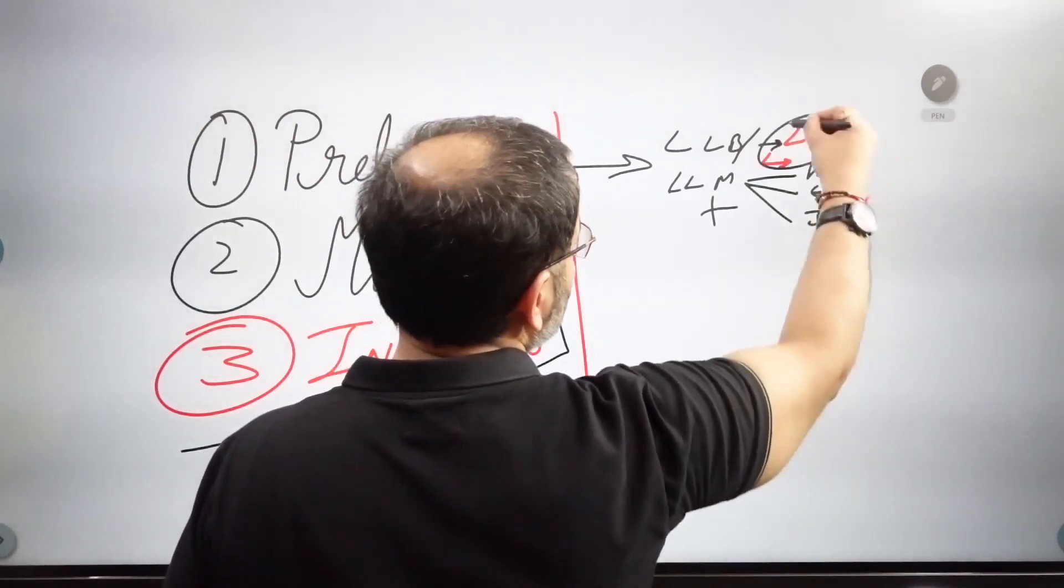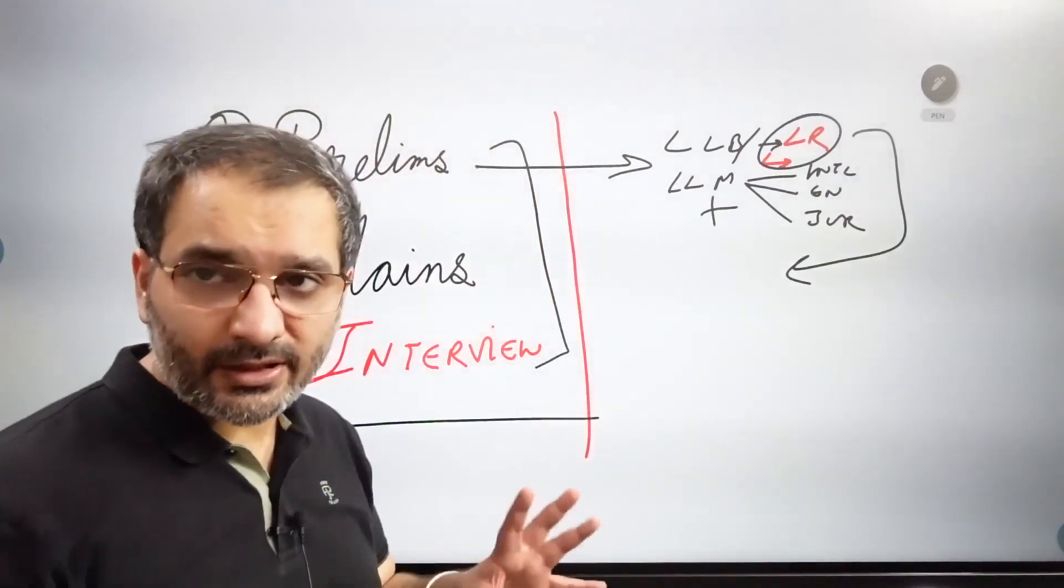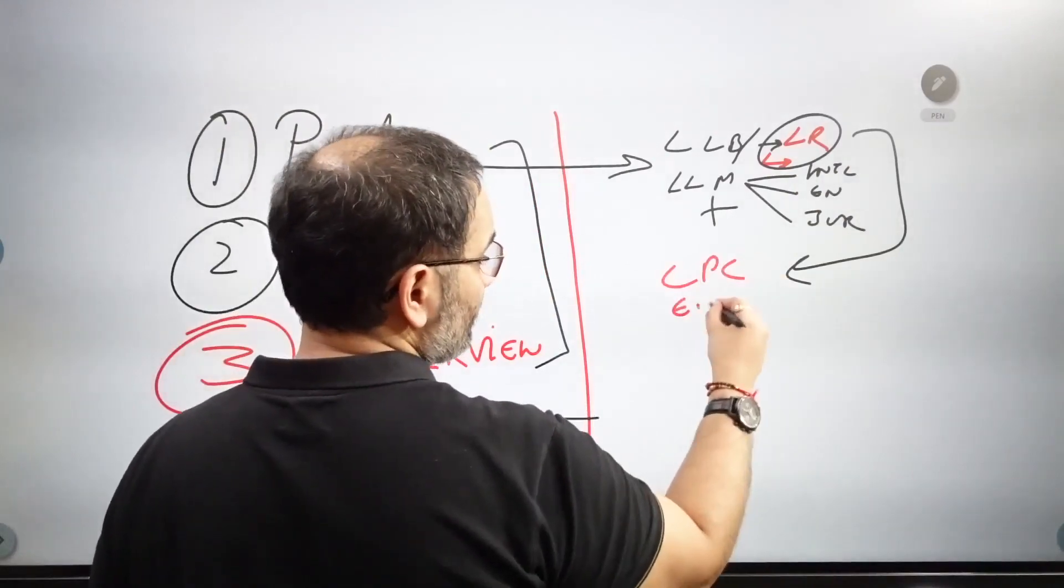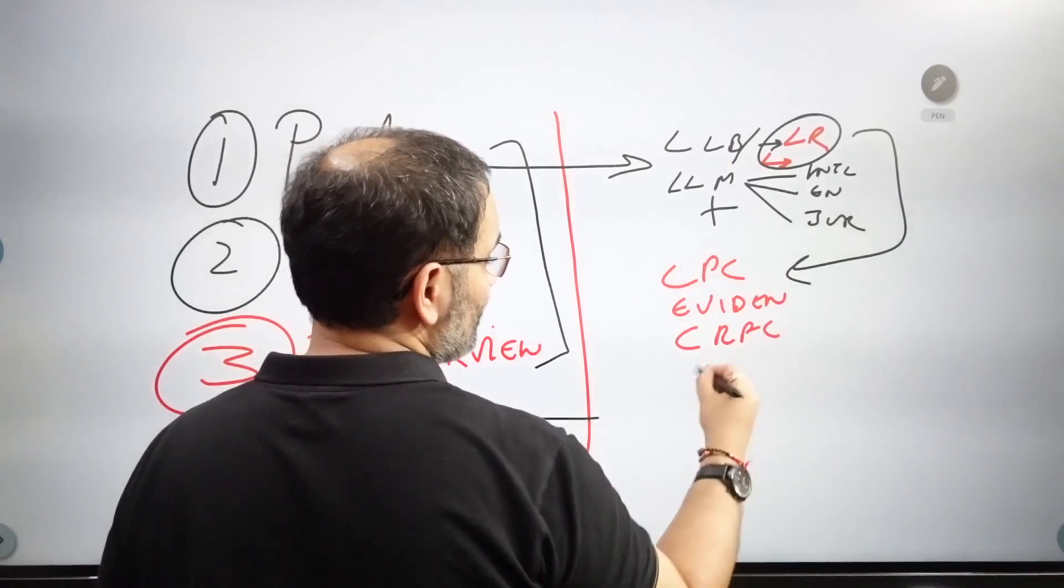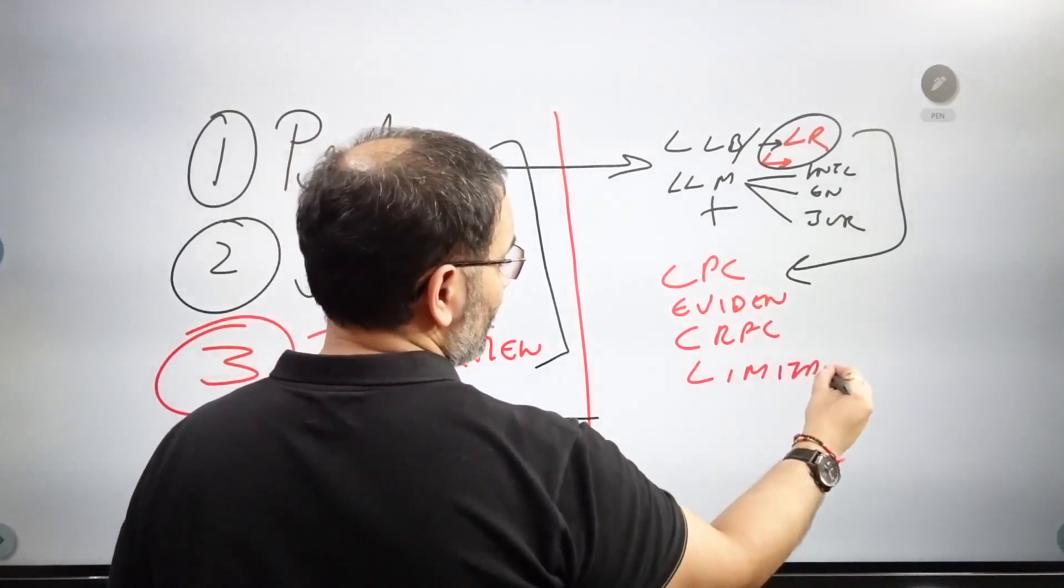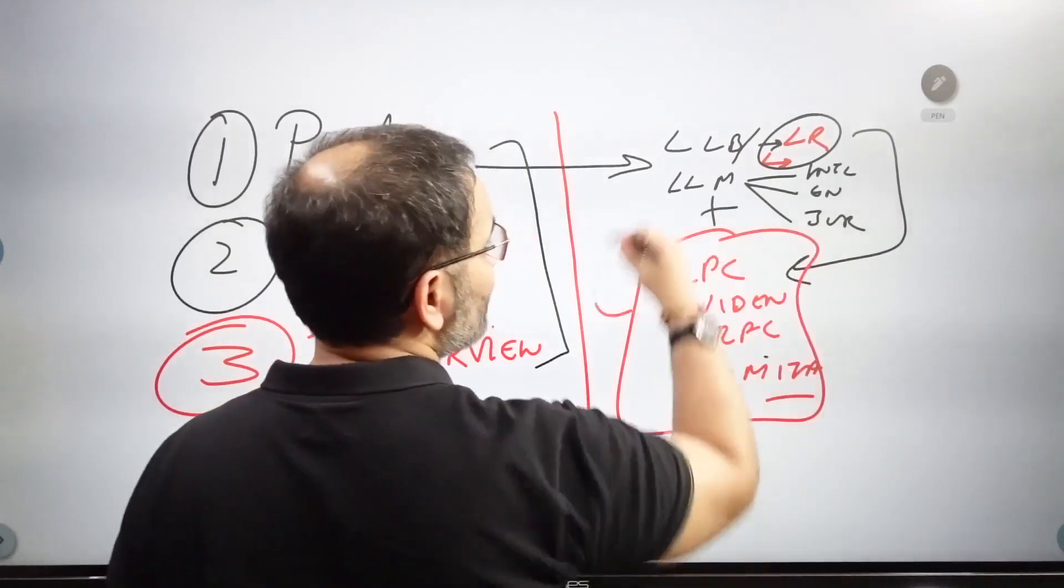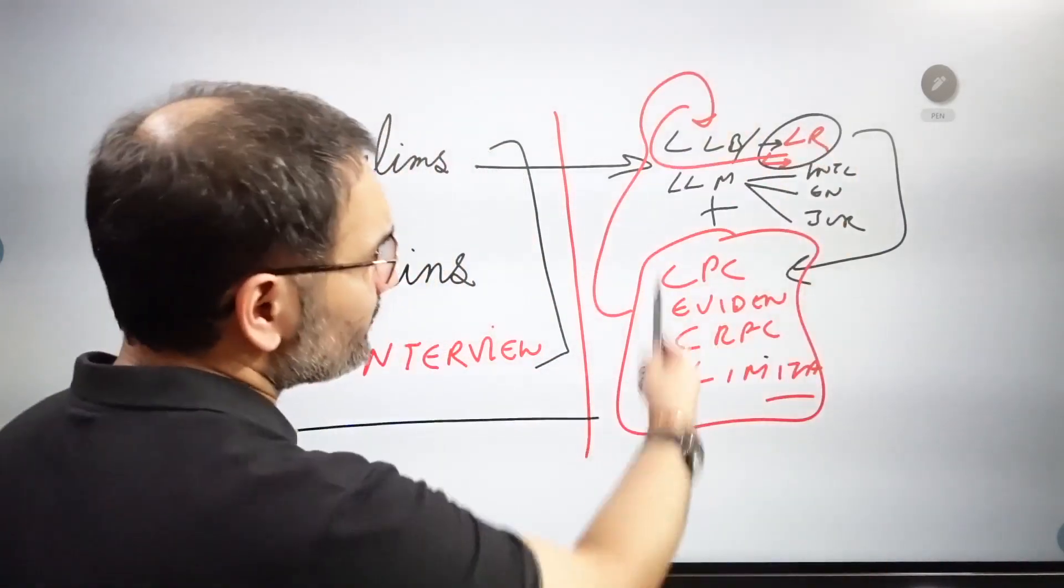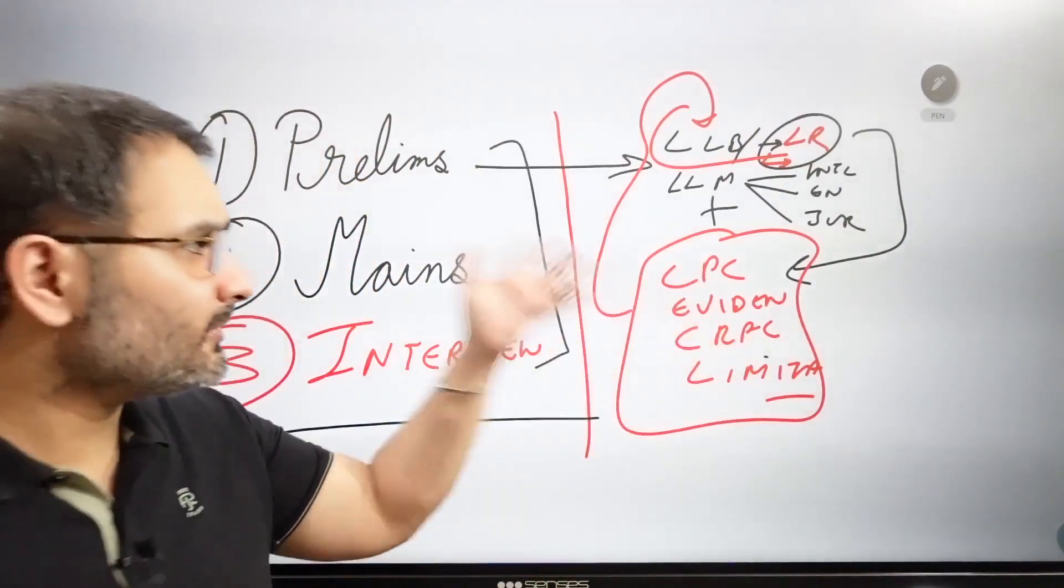When we minus the logical reasoning bit from LLB three year entrance these days, because they are decently tough these days, we add CPC, we add evidence, we add CRPC, we add limitation, we add arbitration, you know stuff such as the other ancillary acts that you're not expected to know at this level. LLM level, but of course I don't consider the LLM paper any different from our judiciary prelims.